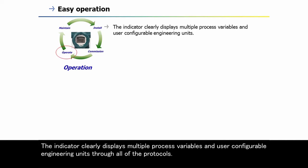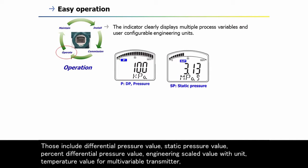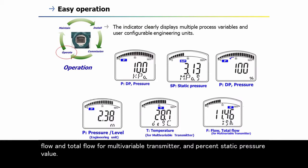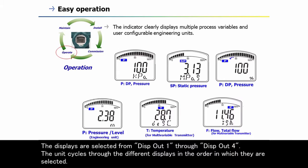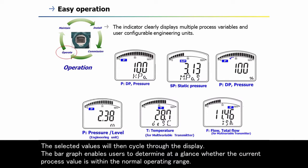The indicator clearly displays multiple process variables and user-configurable engineering units through all protocols. For process value indication, users can select up to four process values for HART or BRAIN protocols, including differential pressure value, static pressure value, percent differential pressure value, engineering scaled value with unit, temperature value for multivariable transmitters, flow and total flow for multivariable transmitters, and percent static pressure value. The displays are selected from DISPOUT 1 through DISPOUT 4, and cycle through in the order selected. If fewer than four displays are needed, leave the DISP setting as not used.